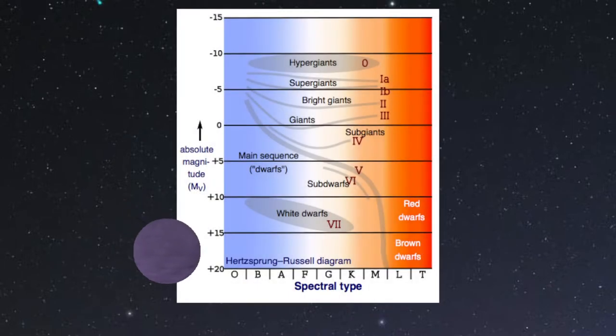The Y-Dwarf class is the coolest stellar temperature class yet defined, following the other classes O, B, A, F, G, K, M, L, and T.